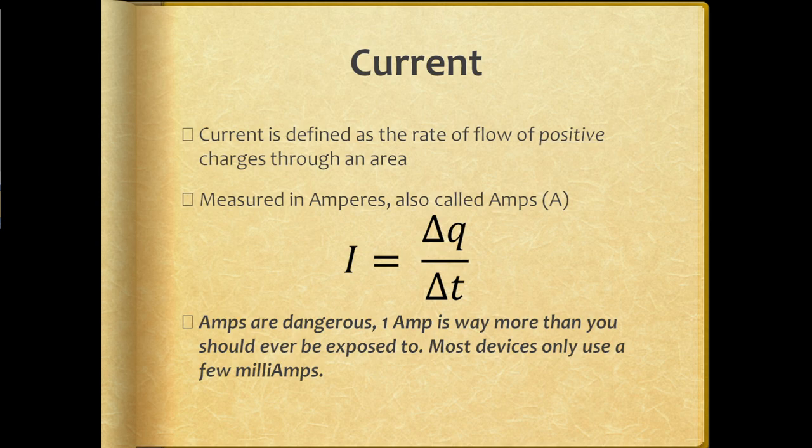One entire amp is one coulomb of charge passing through an object in one second. One amp is a rate of one coulomb per second. If you'll recall from when we were talking about charge and Coulomb's Law, one entire coulomb is an absurd amount of charge. One electron has a charge of 1.6 times 10 to the negative 19th coulombs. It would take more than a trillion surging electrons to get one coulomb of charge.